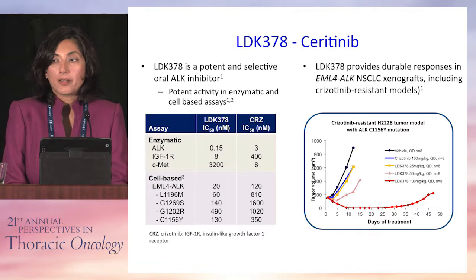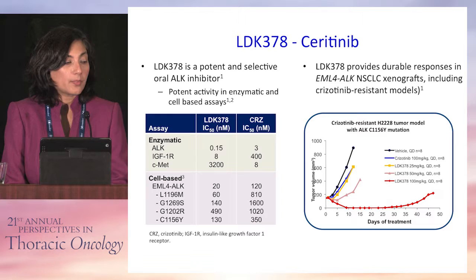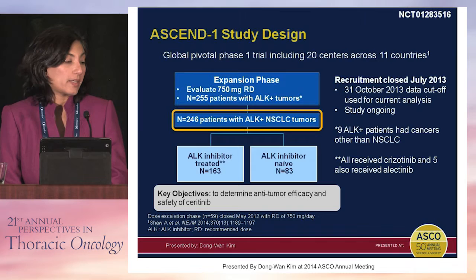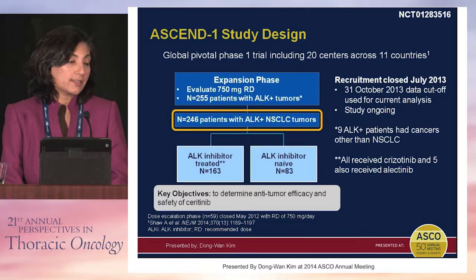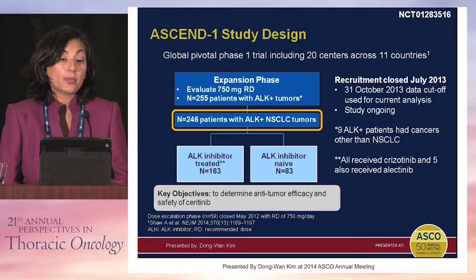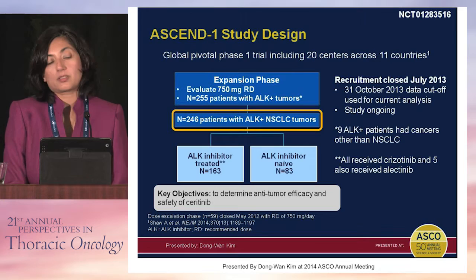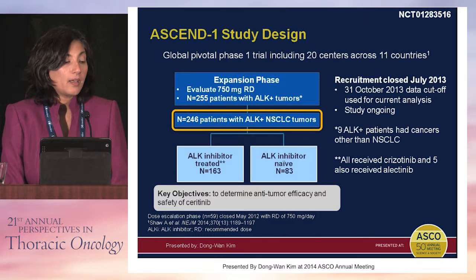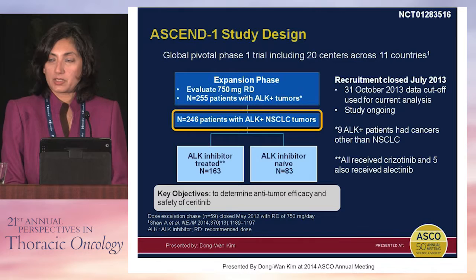Ceritinib was developed as a second-generation ALK inhibitor, and at the time there were limited options for patients when they progressed on crizotinib. Preclinical studies indicated it was a more potent ALK inhibitor than crizotinib and also had activity against some known resistance mutations, including the gatekeeper mutation at 1196 that crizotinib did not have activity against. The ASCEND-1 was a phase 1 dose escalation and expansion study enriched for patients who had ALK-positive disease, predominantly a non-small cell lung cancer study.